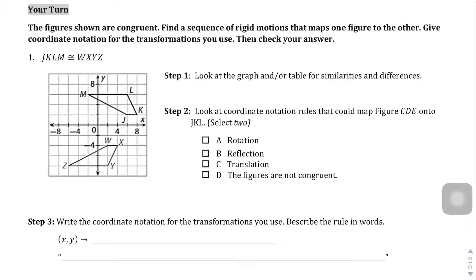We have quadrilateral JKLM, which is congruent to quadrilateral WXYZ, and we're going to be trying to figure out how this shape over here moved over here. If you're having trouble with your 3D spatial reasoning, this might be a bit of a stretch, and so you might want to write all the coordinate points down just to help you keep track of what's going on.